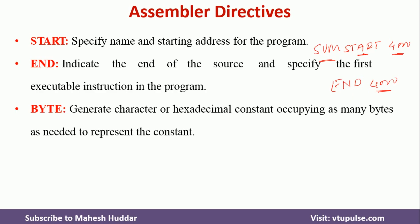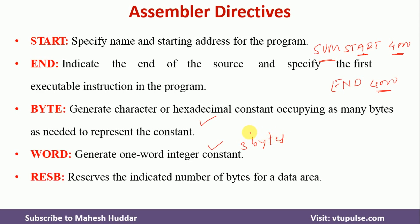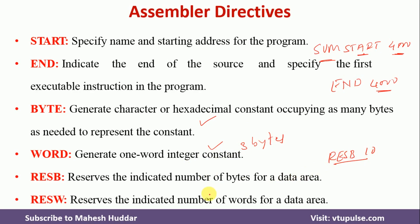BYTE is used to generate a one-byte character constant, and WORD is used to generate a one-word integer constant — one word is three bytes. RESB is used to reserve a number of bytes; for example, RESB 10 reserves 10 bytes. RESW is used to reserve a number of words; for example, RESW 10 reserves 10 words, which is equivalent to 30 bytes.